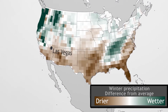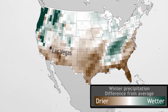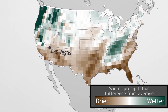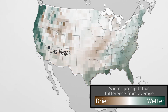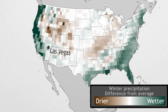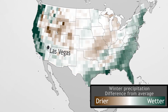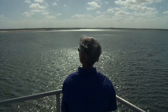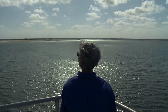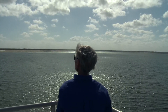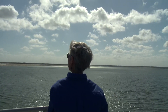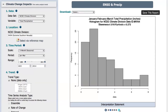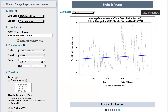Here in Las Vegas, Nevada, La Niña events bring an elevated chance of drier-than-normal precipitation, while El Niños bring an elevated chance of wetter-than-normal conditions. If you're a city planner or water utility employee, you could use this climate information to evaluate important decisions.